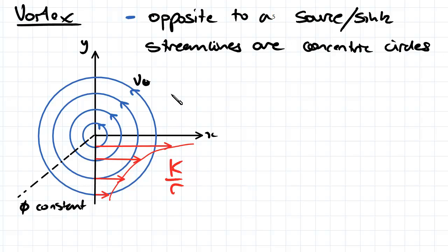And therefore also our velocity potential lines are now radial lines.